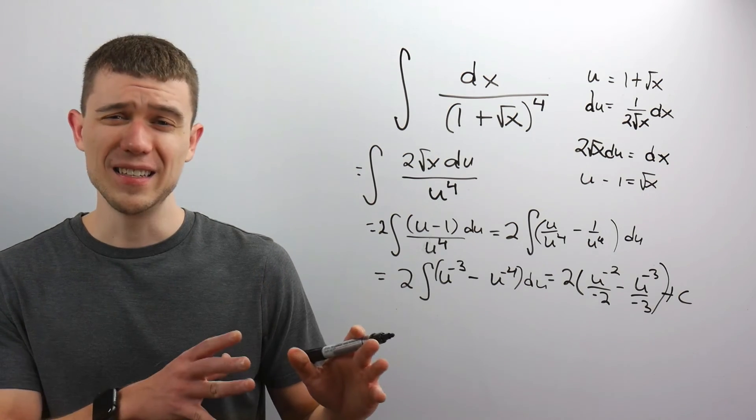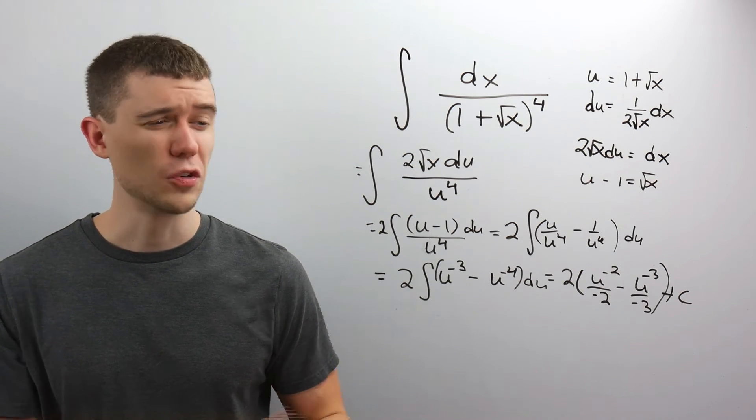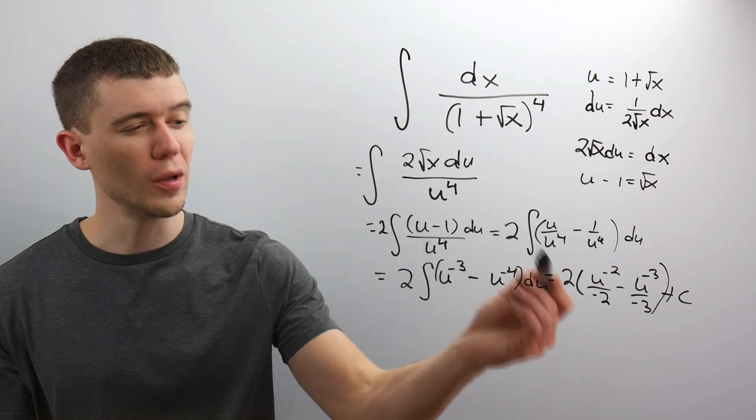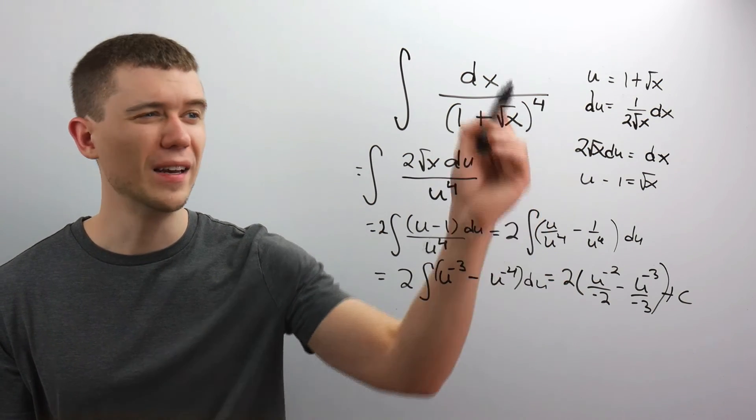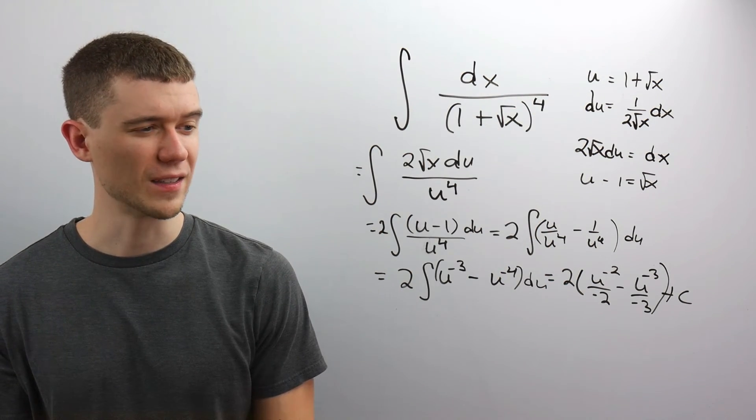Now I started with x's. I'd like to end with x's. So everywhere I see a u, I'll replace it with what I know u to be. U was 1 plus root x.